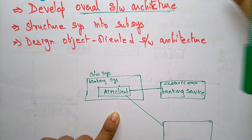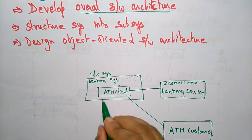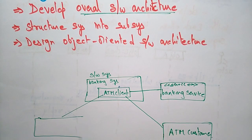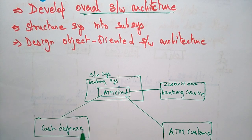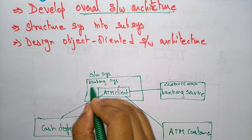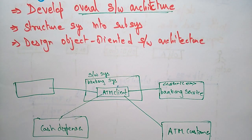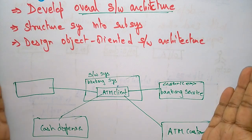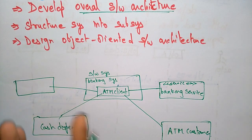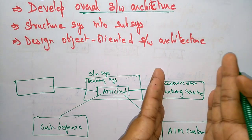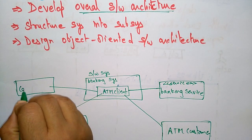The ATM client also needs to communicate with the external user, that is the ATM customer, and also communicates with the external output device — the cash dispenser. So this is complete design modeling: how you are going to design a system and the overall software architecture. Based on this, in the implementation section we will implement the cash dispersal role, what the ATM customer will do, the banking services, and external input/output devices like the card reader.